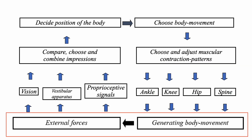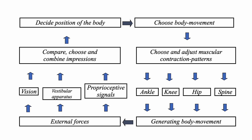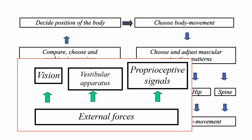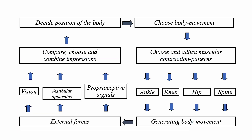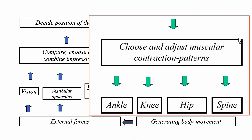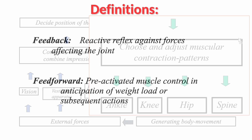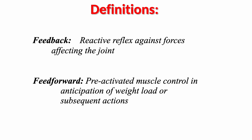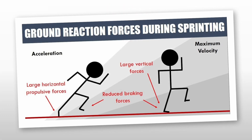The generated body movement changes the external forces. Newly formed external forces also change new sensory signals in the vision, vestibular apparatus, and proprioceptors. These cycles run continuously, readjusting and reforming to achieve the goal. Our body has several typical muscular contraction patterns for harmonious and efficient movement. We call it a feed-forward mechanism — pre-active muscle control in anticipation of weight load or subsequent actions.